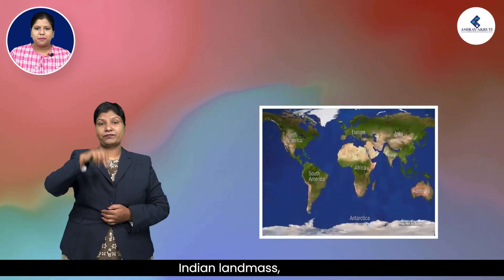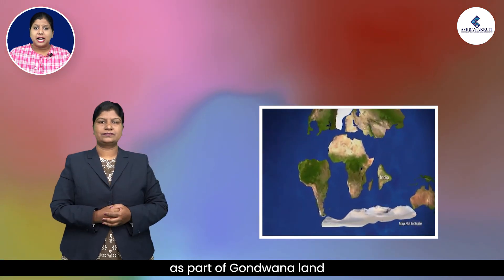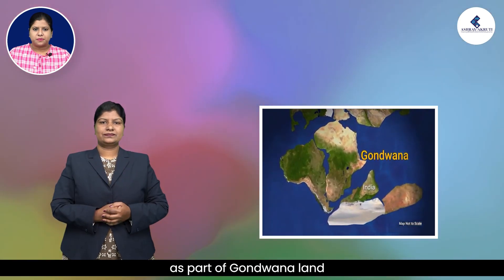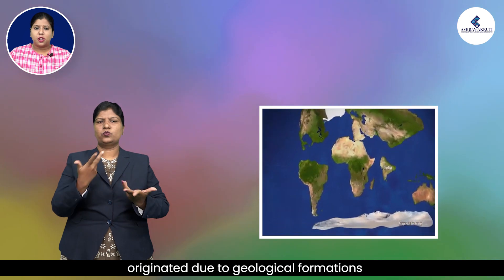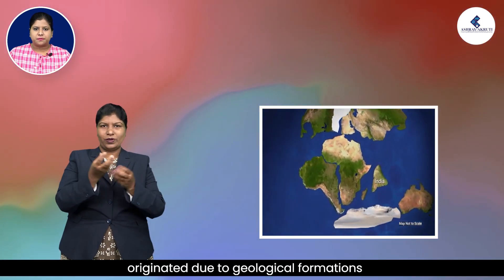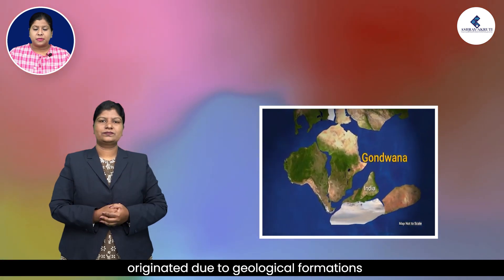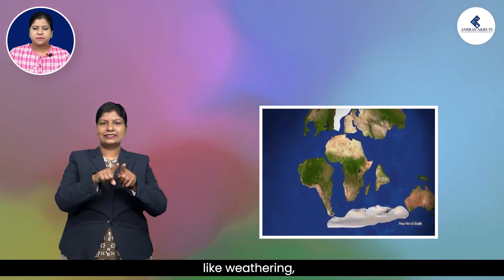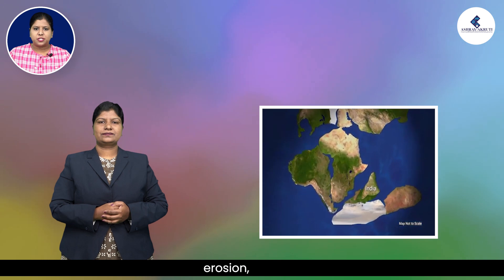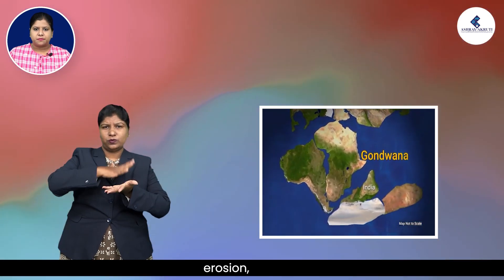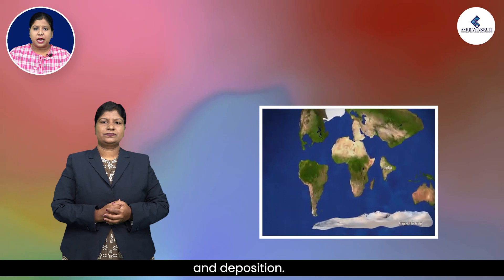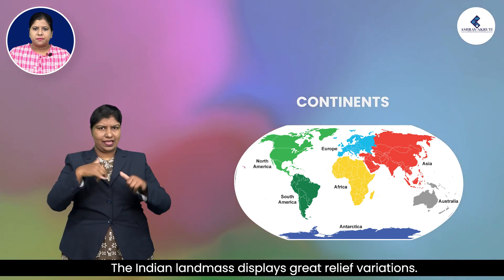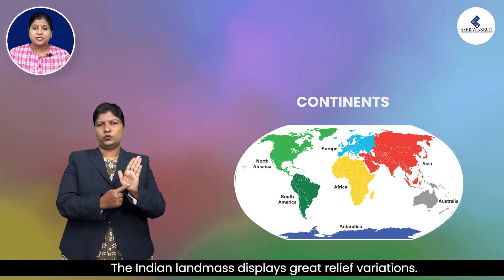The Indian landmass, as part of Gondwana land, originated due to geological formations and several other processes like weathering, erosion, and deposition. The Indian landmass displays great relief variations.